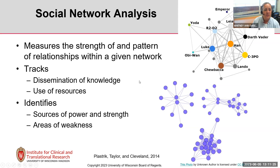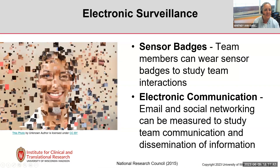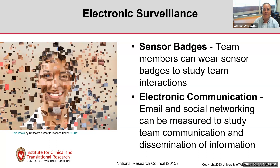Social network analysis can identify sources of power and strength in your team and look for areas of weakness. It's often based on self-report of who's talking to whom. More recently, studies have used sensor badges that measure who's where and who they're talking to — so you don't have to rely on self-report. You can also derive information from social networking sites, social media, and email to figure out who's communicating with whom.